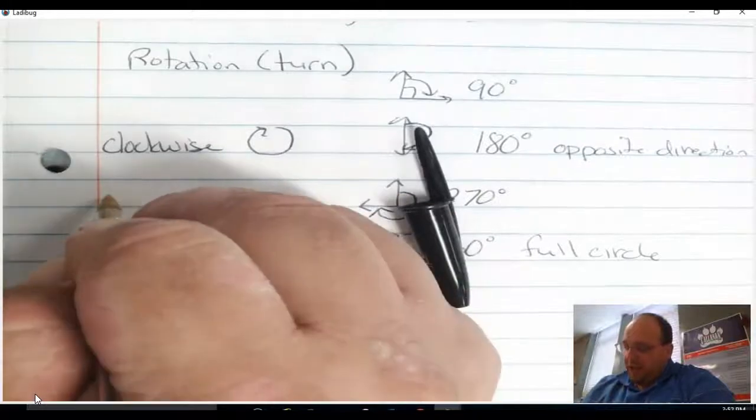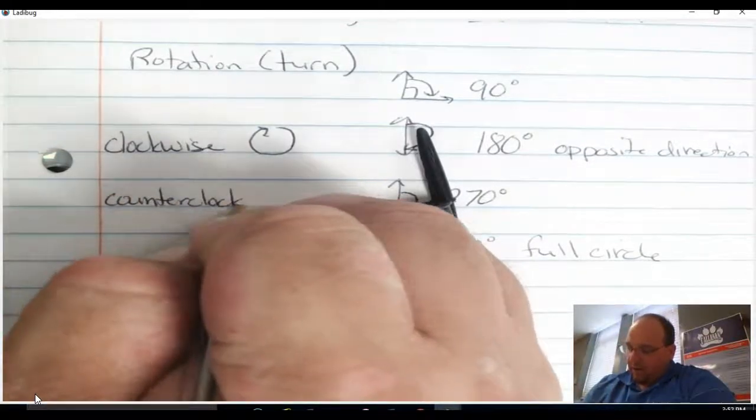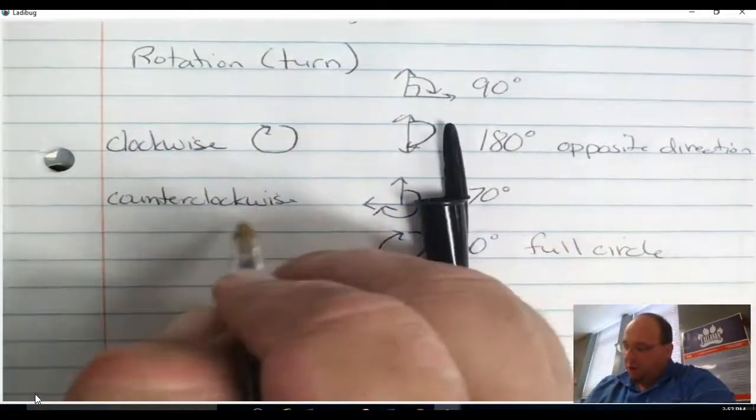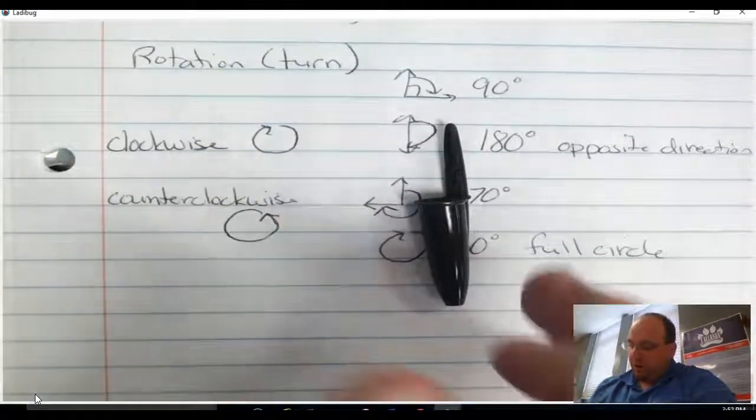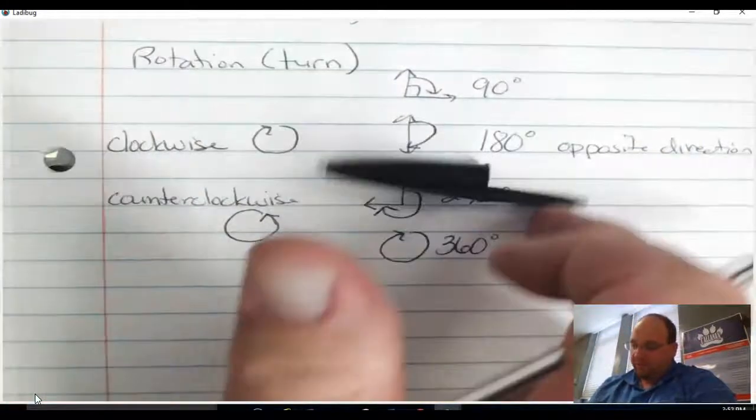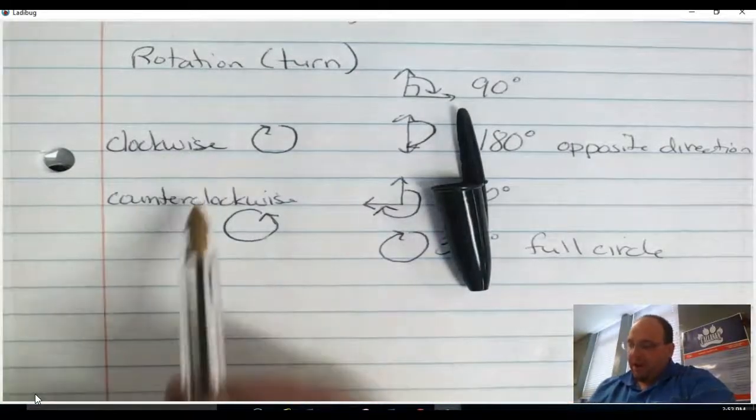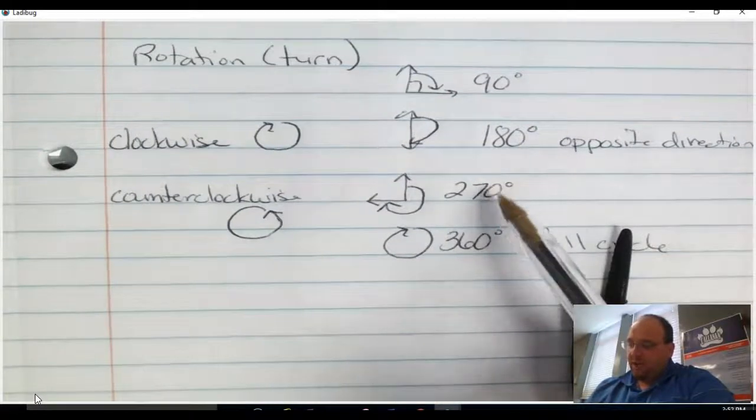The opposite of clockwise is what we call counterclockwise. Counterclockwise is the opposite direction. We're going to go left to right, the opposite direction. So we have clockwise and counterclockwise. We have 90 degrees, 180 degrees, 270, and 360.